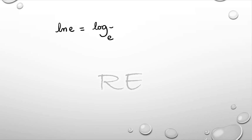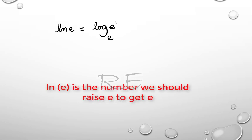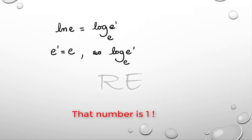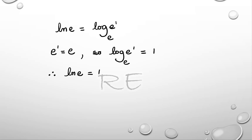The natural log of E is equal to log base E of E — that is, log base E of E to the first. To what power should I raise E to get E to the first? Remember, a logarithm is a power. E to the first is equal to E. Therefore, that power is 1. So log base E of E to the first is 1. Our conclusion is that ln E is equal to 1.